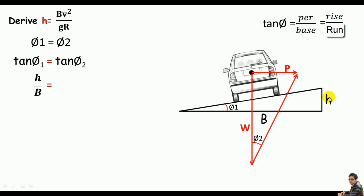the vehicle weight acting downward, so P/W equals h/B. If you recall from physics, P/W is the centrifugal ratio which is always equal to